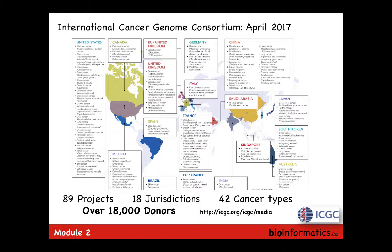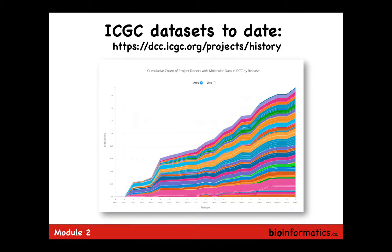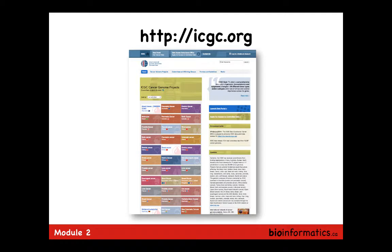Every continent is included in the ICGC project except Africa, which is unfortunate because Africa has more genomic variation within that one continent than there is within the rest of the world combined — we missed a great opportunity by not including projects from that part of the world. The databases are growing, and we have to deal with that.